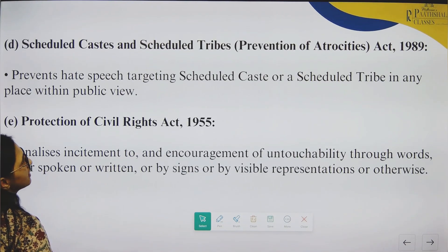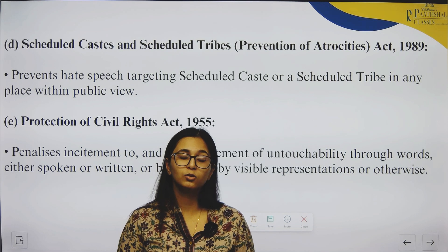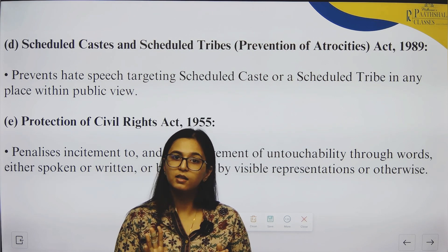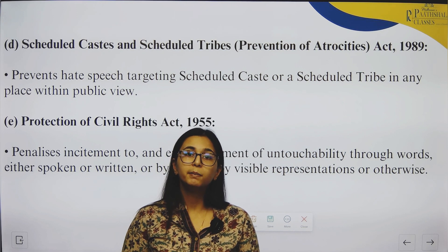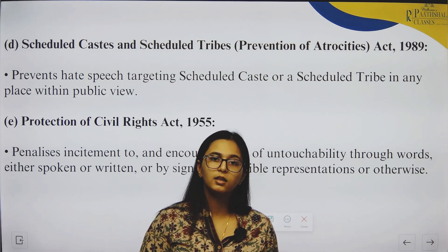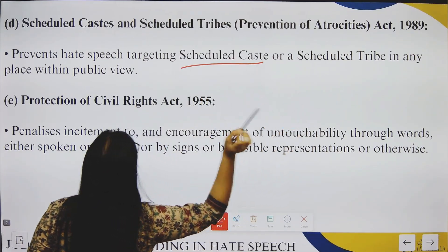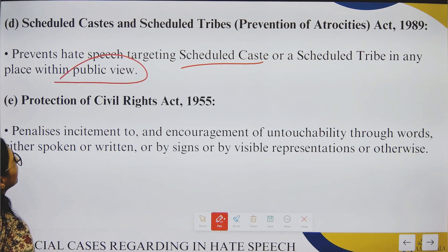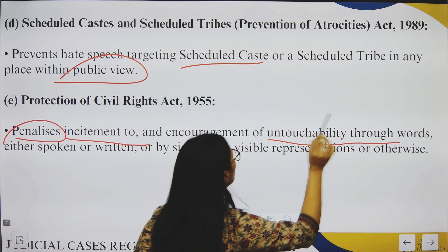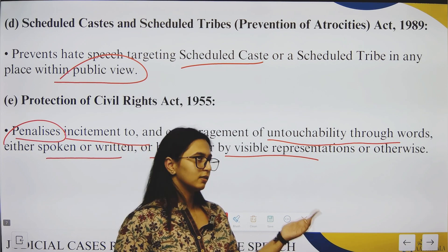Then we have Scheduled Caste and Scheduled Tribe provisions. Generally in India, the caste system is prominent, so obviously hate speech regarding caste also exists. There are provisions for preventing hate speech targeting Scheduled Castes or Scheduled Tribes in any place within public view. Additionally, the Protection of Civil Rights Act penalizes incitement to and encouragement of untouchability through words — either spoken or written — or by signs or visible representation or otherwise.